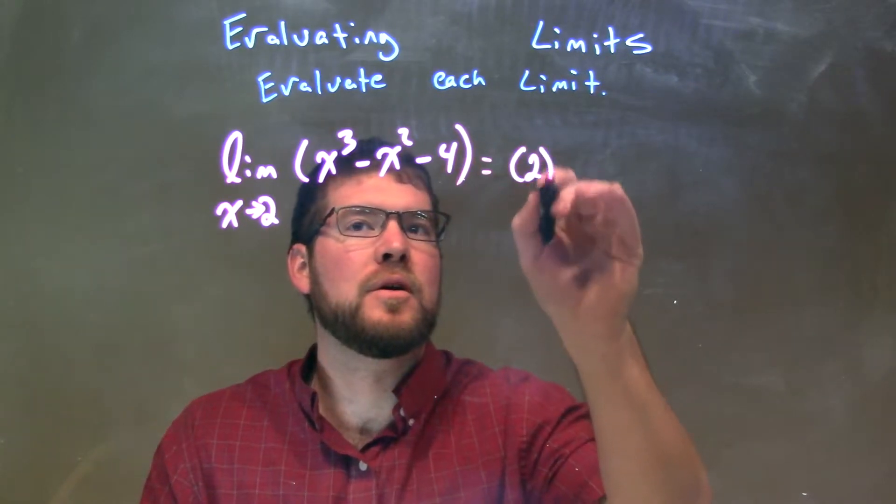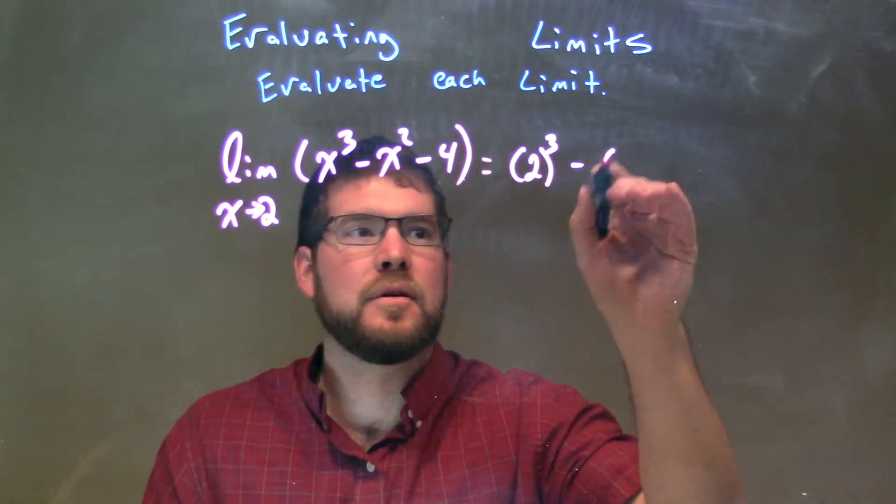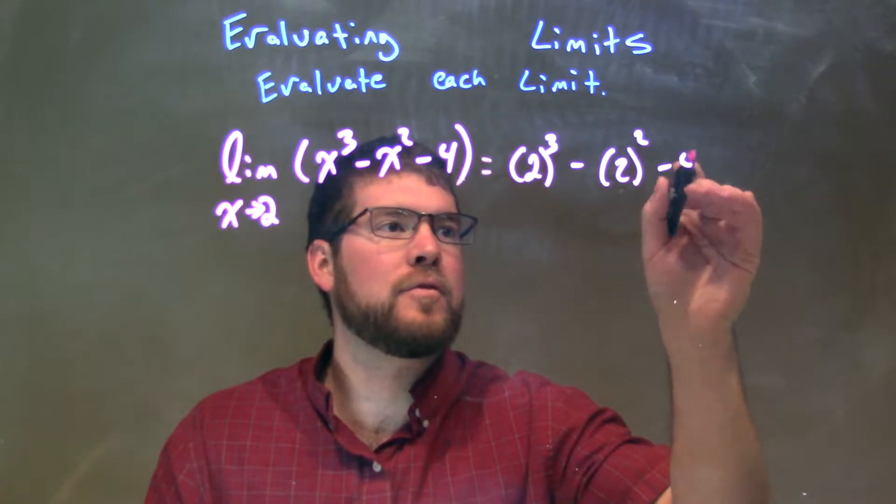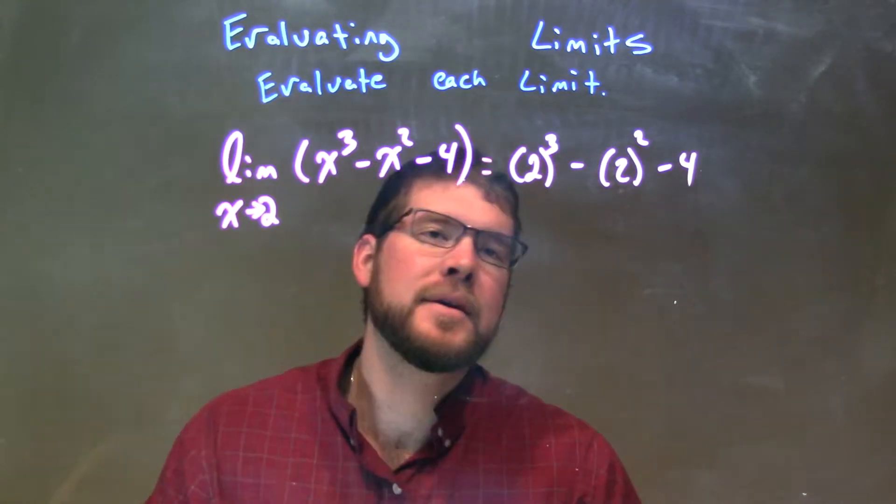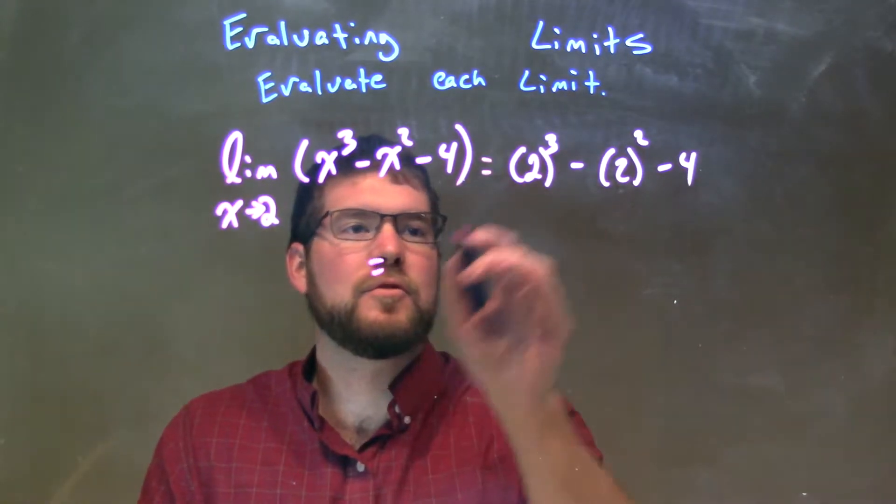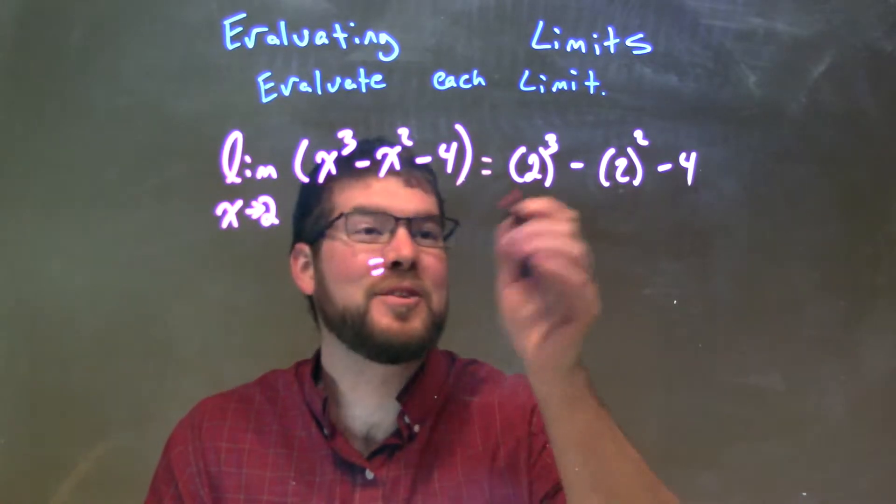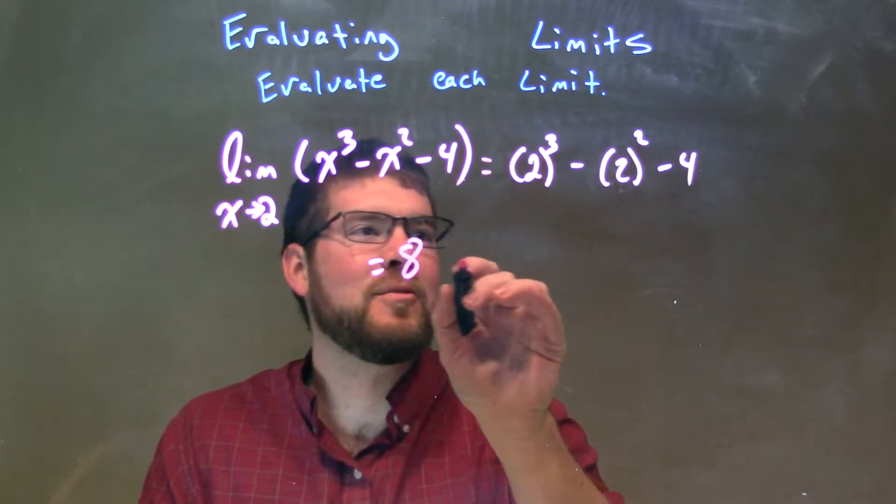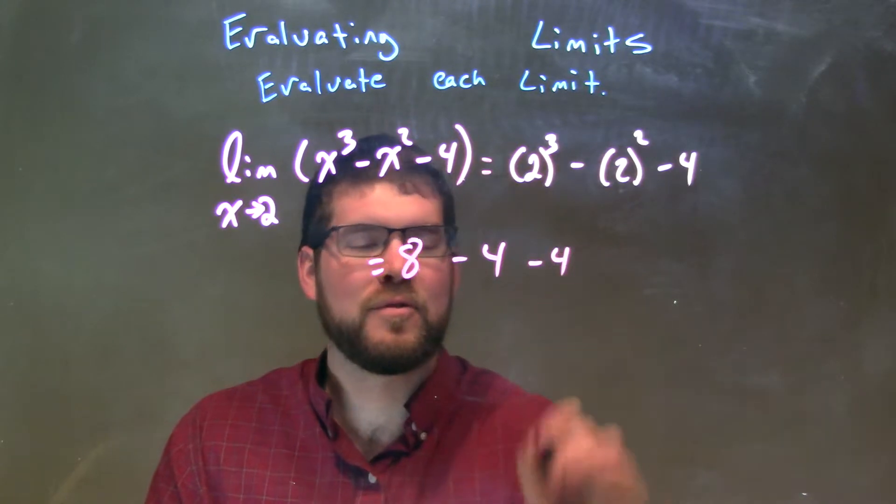We plug 2 in, so we have 2 to the third power minus 2 squared minus 4. And then from there, we need to simplify. Well, 2 to the third power is 8, right?